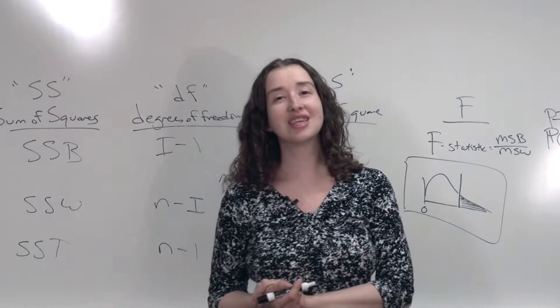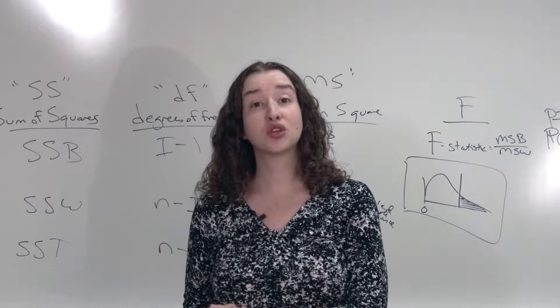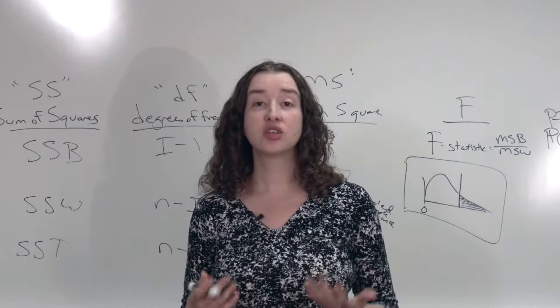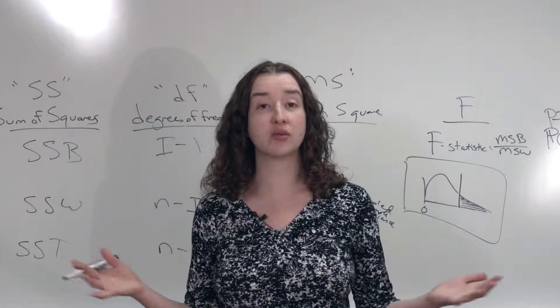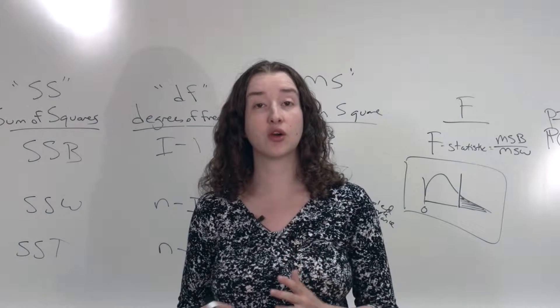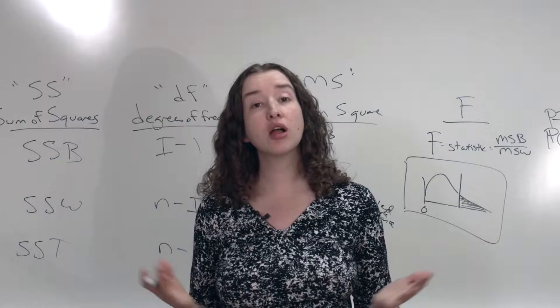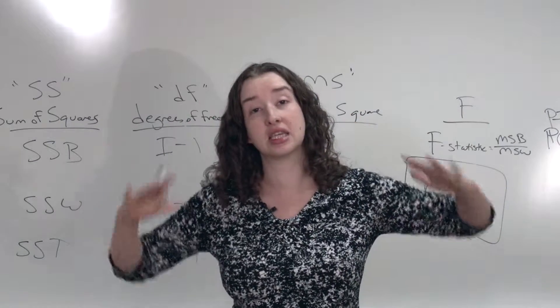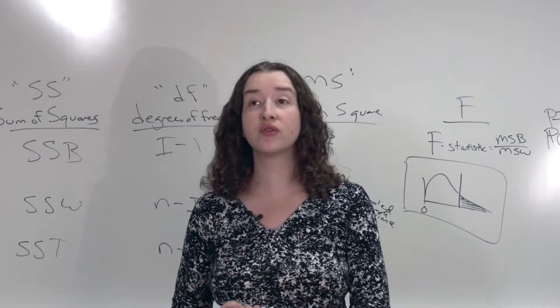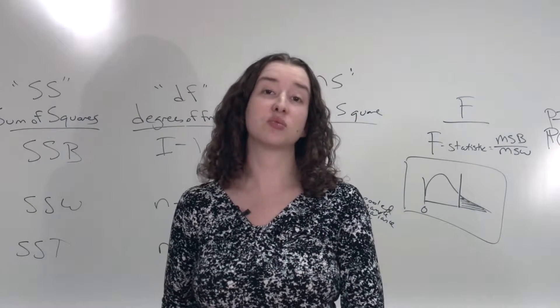We've also talked about t-distributions. T-distributions are specified by their degrees of freedom. We've said that a t-distribution with a very large number of degrees of freedom looks essentially like a normal distribution with mean 0 and variance 1. But the smaller the degrees of freedom, the bigger the tails on that t-distribution. So if you tell me you have a t-distribution with 13 degrees of freedom, then I know exactly what that t-distribution should look like.